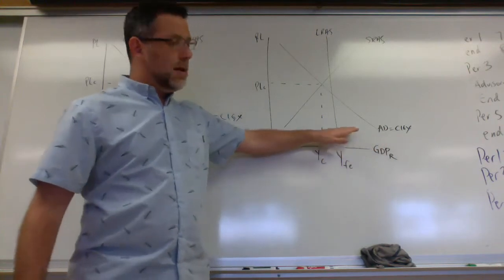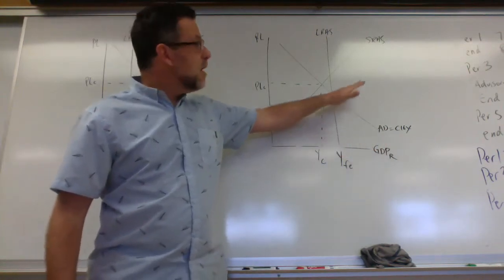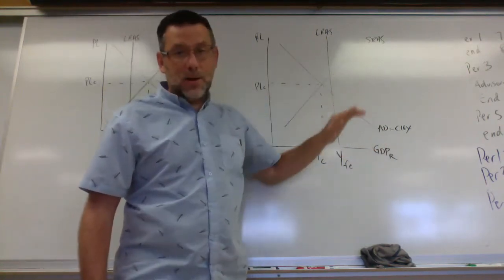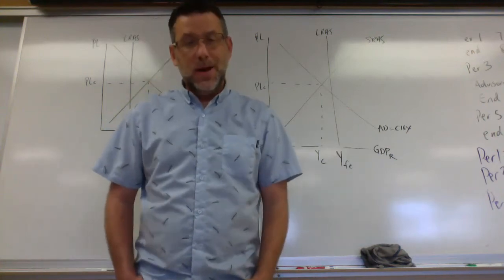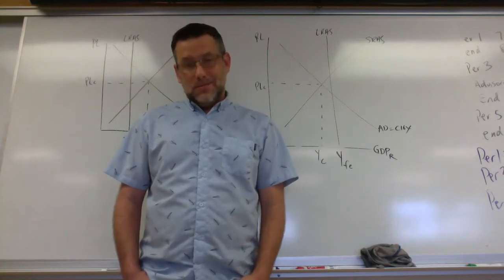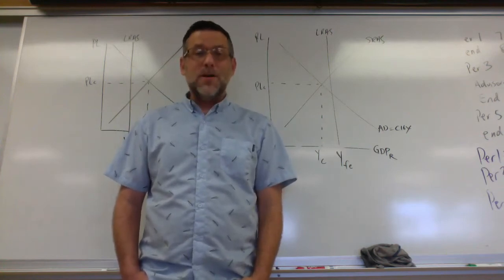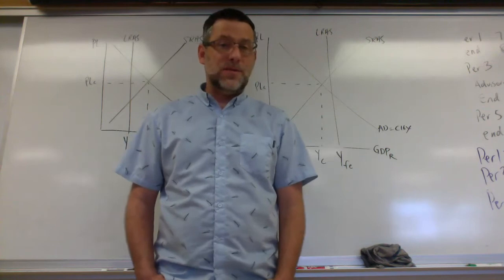So if we have an inflationary or recessionary gap, the president and Congress can use this fiscal policy to close that gap. Now remember, in unit five, short run aggregate supply closes the gap because we wait for wages to adjust to changes in output. We don't want to wait. If we want to fix it now, we can using fiscal policy.